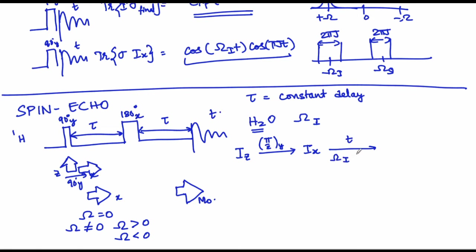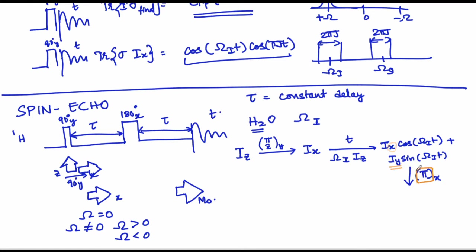From what we have learnt in the previous class, you are going to get Ix cos(Ωᵢτ) + Iy sin(Ωᵢτ). Then you apply a 180 degree pulse along the x axis. Therefore, the x magnetization will not change while the y gets inverted because it is a 180 degree pulse. So you get Ix cos(Ωᵢτ) − Iy sin(Ωᵢτ).